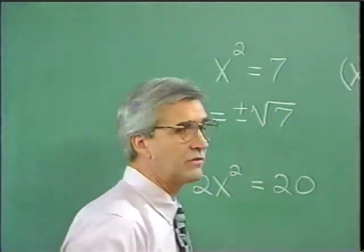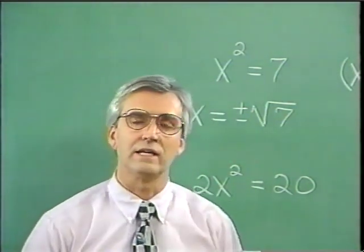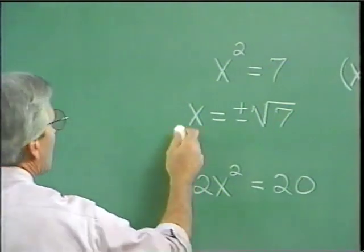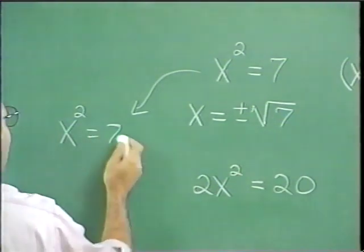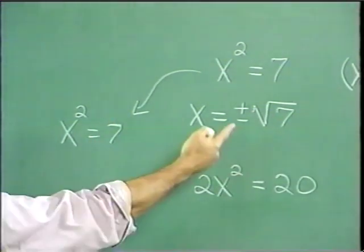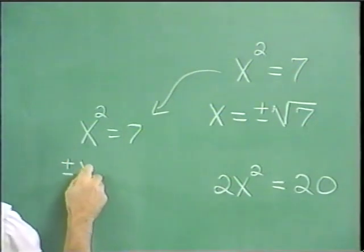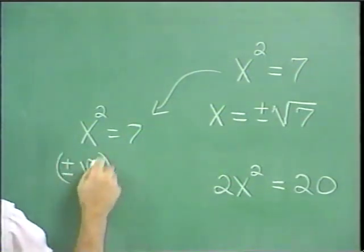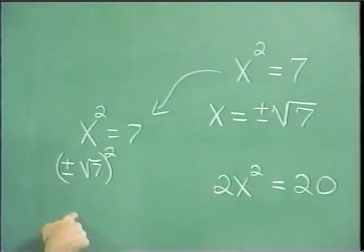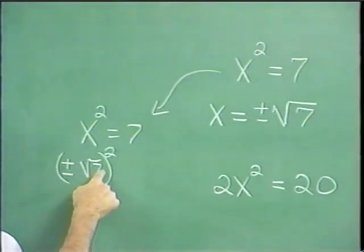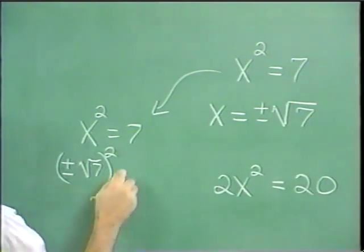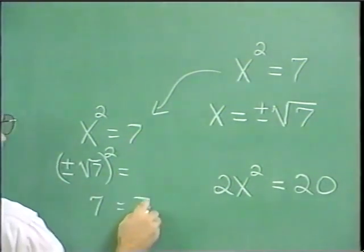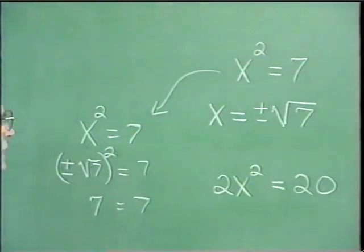We can check to see if these are valid solutions. Take the original equation, x squared equals 7, and replace x with plus or minus the square root of 7. When we square positive numbers, we get a positive result; when we square negative numbers, we also get a positive result. Squaring the square root of 7 undoes the square rooting, so we get 7 on the left and 7 on the right — truth, and a valid solution.